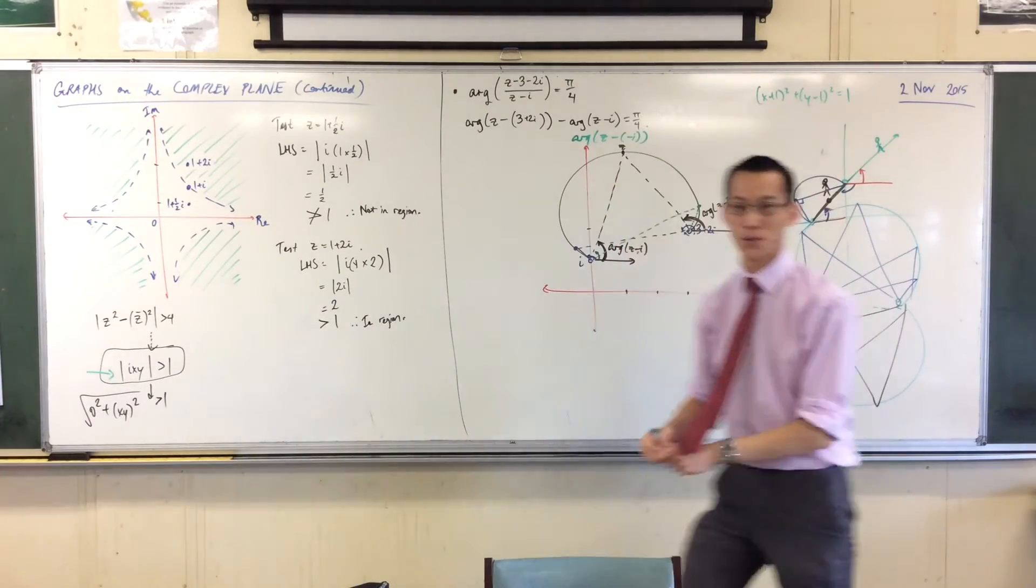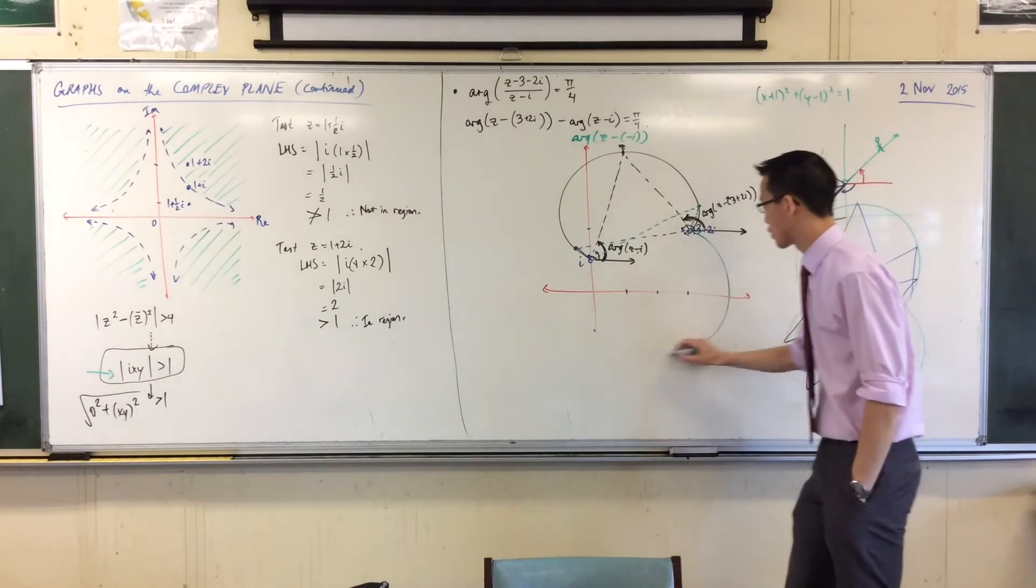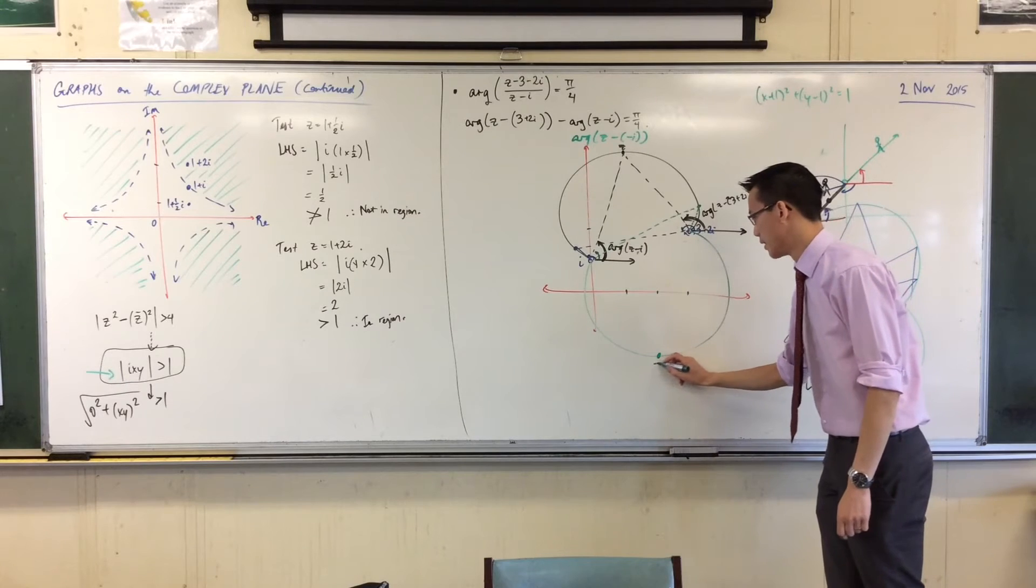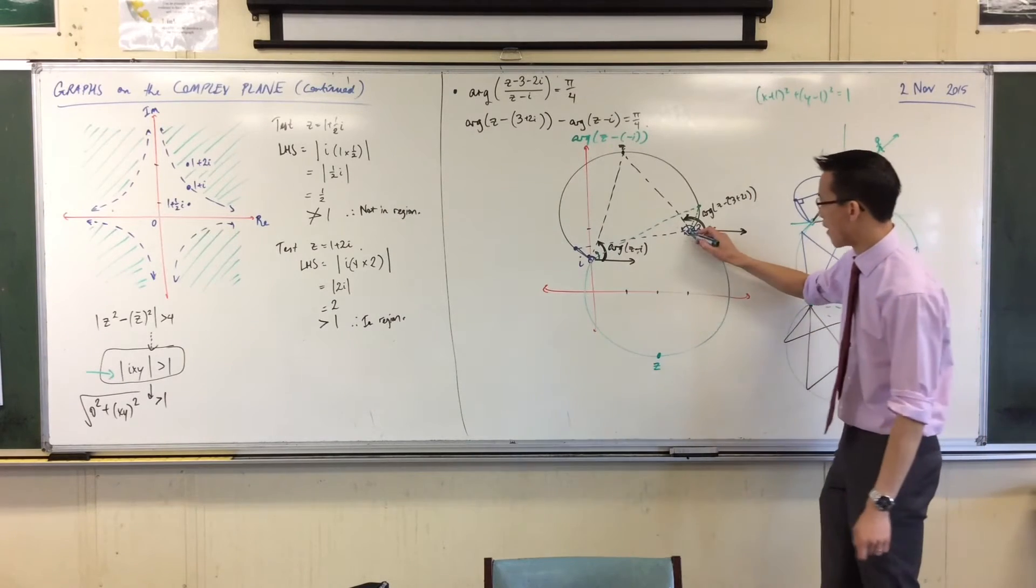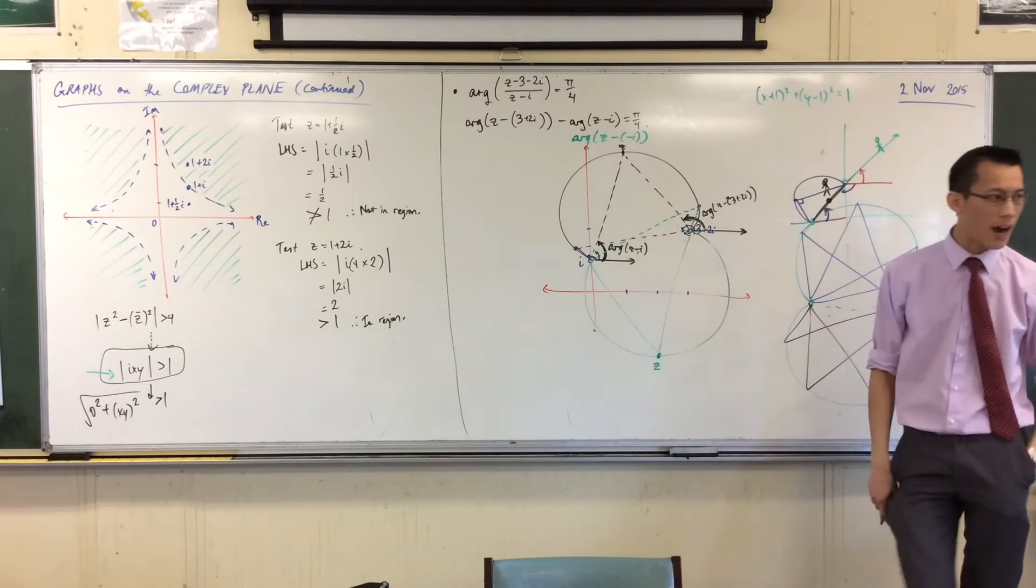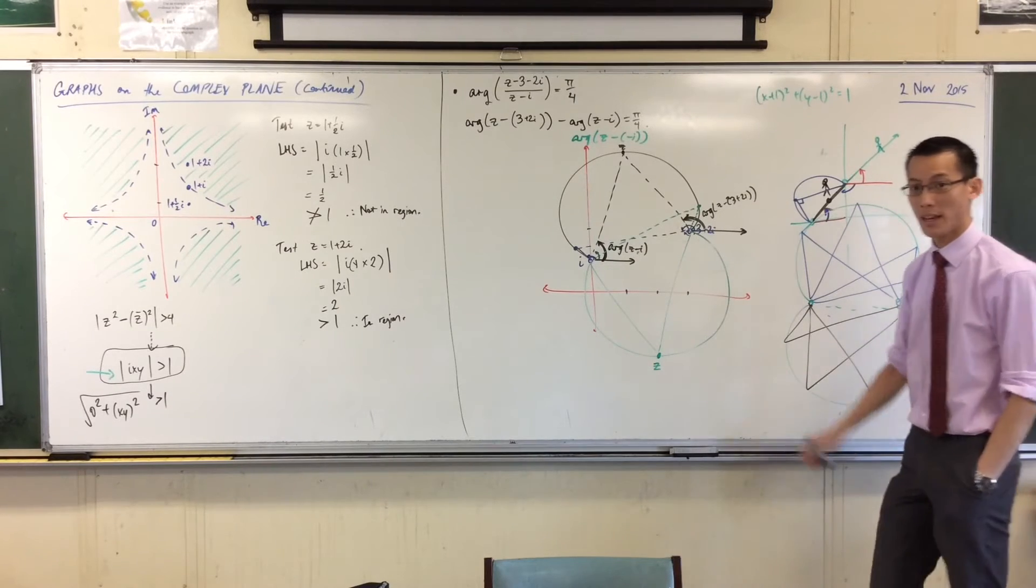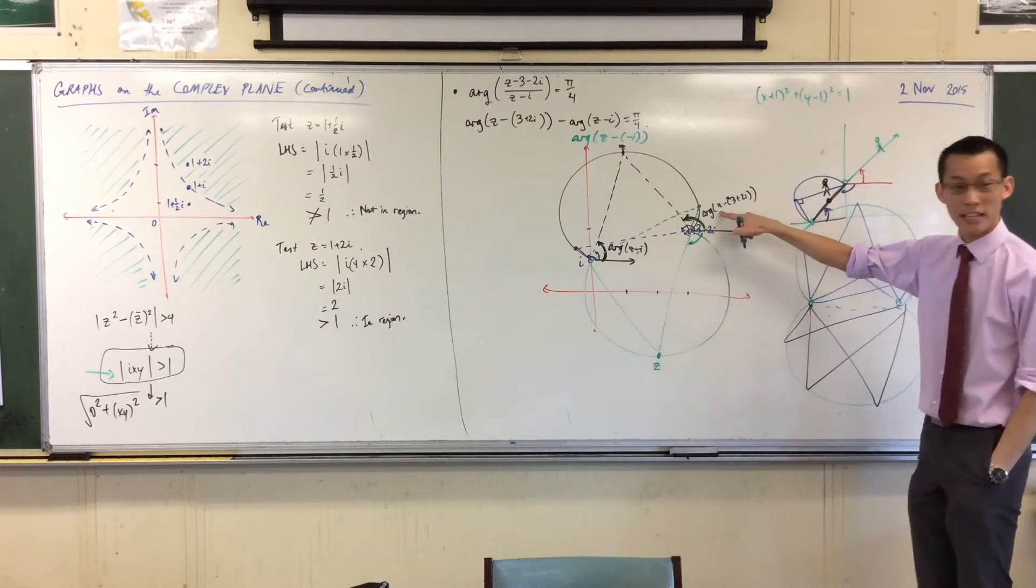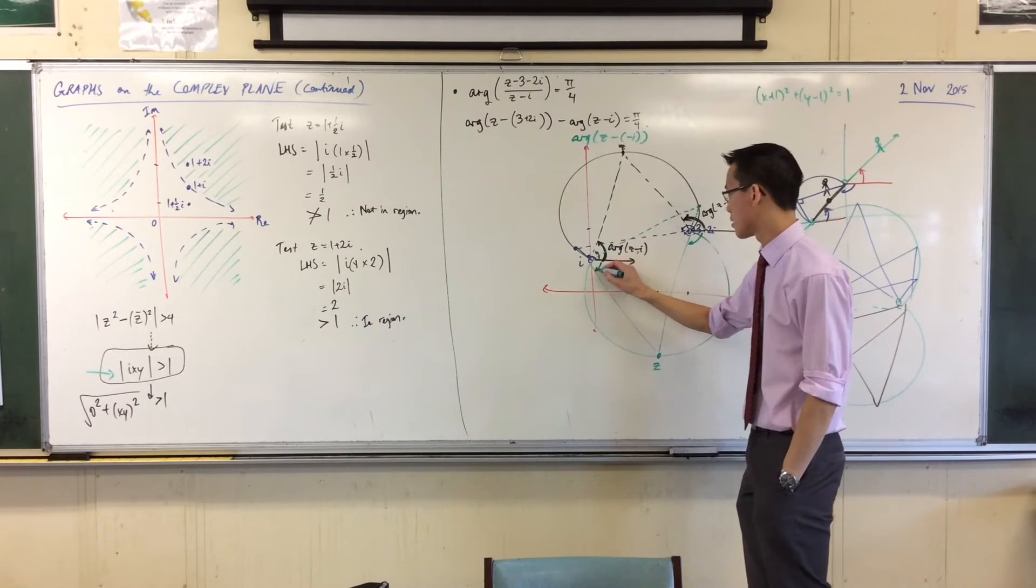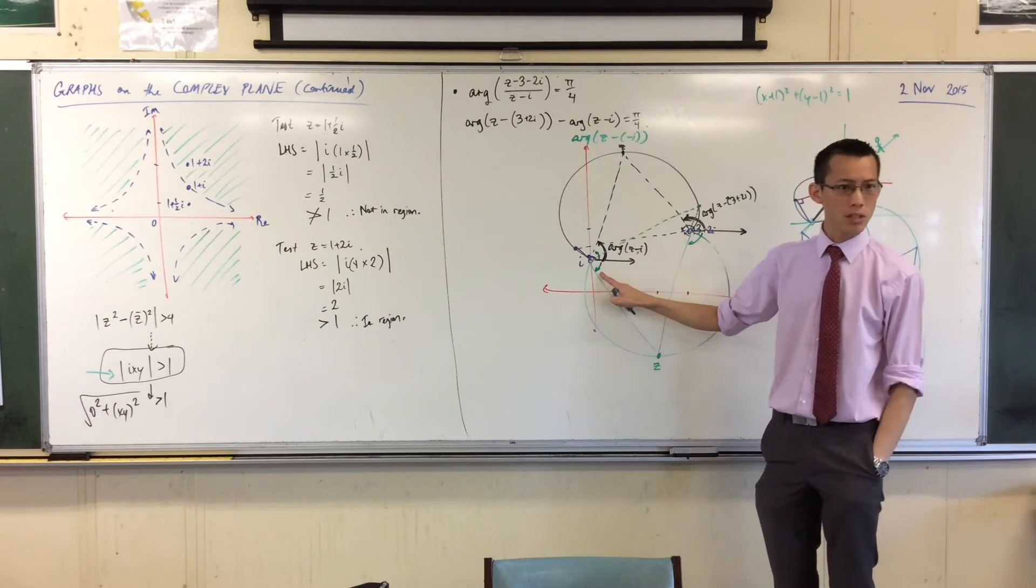But let's think about what happens if you tried the other arc, this other major arc down the bottom. So if I draw it like so, pick a point for me. Let's pick an easy one like here. Let's call this z instead. If I've got this angle and this angle, where are the arguments that I'm measuring? So here is arg of z take away 3 plus 2i. There's that one. And then here is the other one. Now when you subtract this one take away this, what's going to happen?